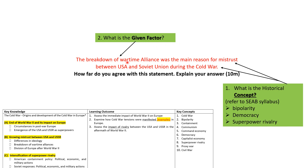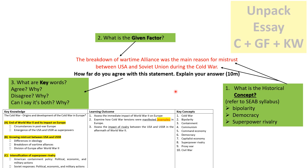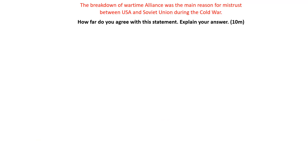We are looking at superpower rivalry, which is why there is mistrust. The given factor is the breakdown of wartime alliance. The keyword is whether you agree or disagree that breakdown of wartime alliance was the main reason for mistrust. When you unpack any essay, think: what is the key concept, what is the given factor, and what is the keyword?